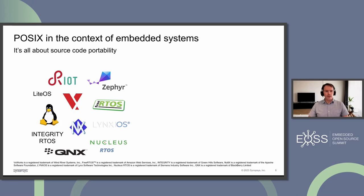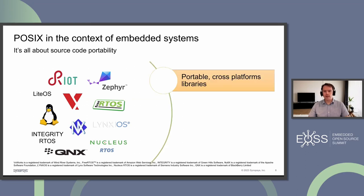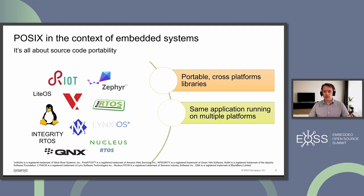Speaking about POSIX in the context of embedded systems — what is important is source code portability, so that you may basically recompile your source for different platforms and reuse your existing code. When your application implements everything itself and doesn't rely on external libraries, there is no need for POSIX, and that kind of software might be portable, though not necessarily. But with increasingly complex software, even for deeply embedded solutions, it becomes impractical to develop everything from scratch as it is very time consuming.